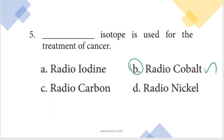Next: which isotope is used for the treatment of cancer? There are four radio isotopes given. Among them, radio cobalt is used for the treatment of cancer. So option B is the right answer.